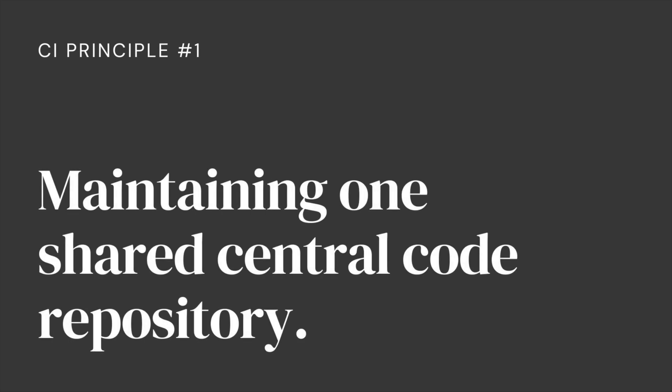Principle number one: maintaining one shared central code repository. Continuous integration requires all code from different teams to work together correctly. For this reason, branching — temporarily storing code from different developers and teams into separate repositories on the source control system — should be kept to a minimum, and all code should be merged into the mainline repository as soon as possible.